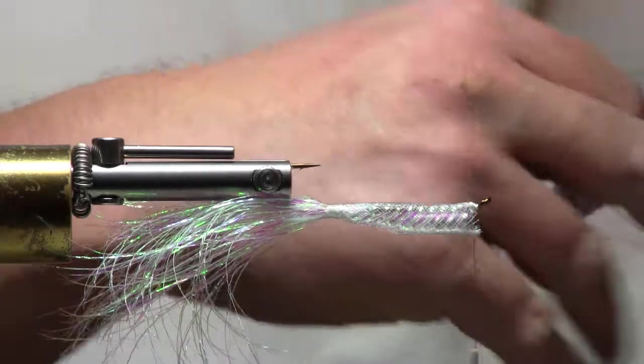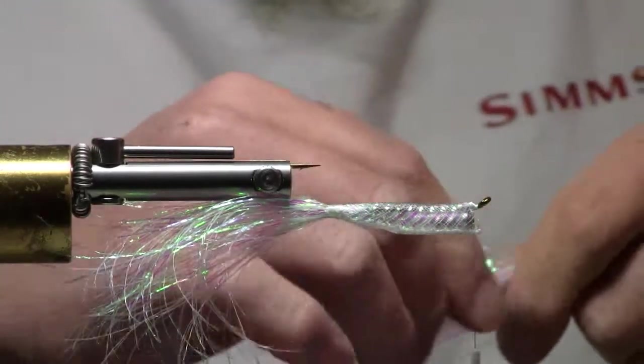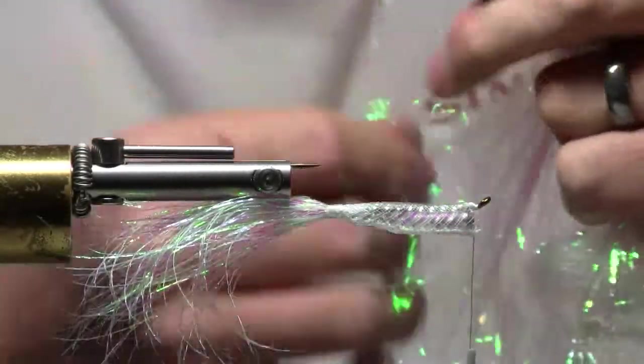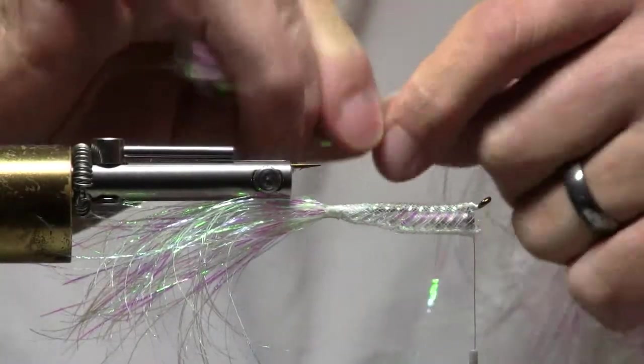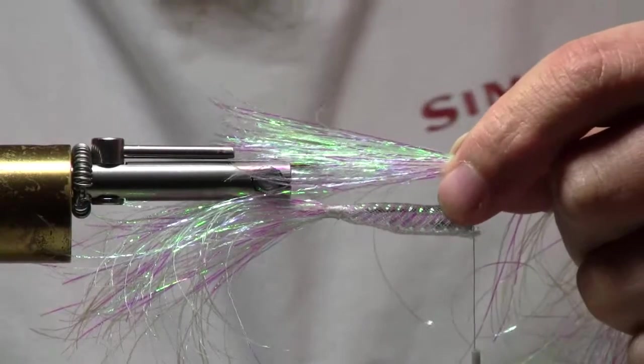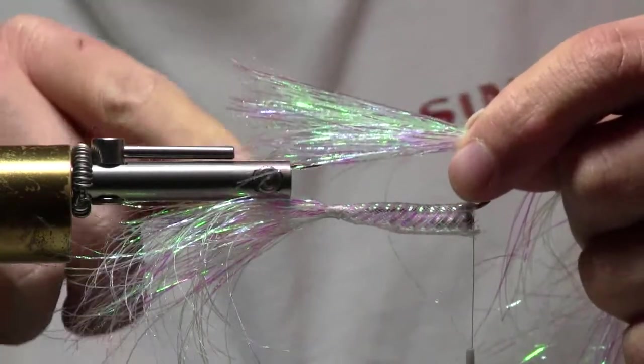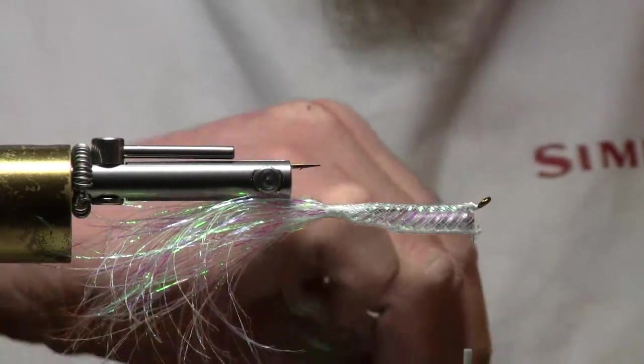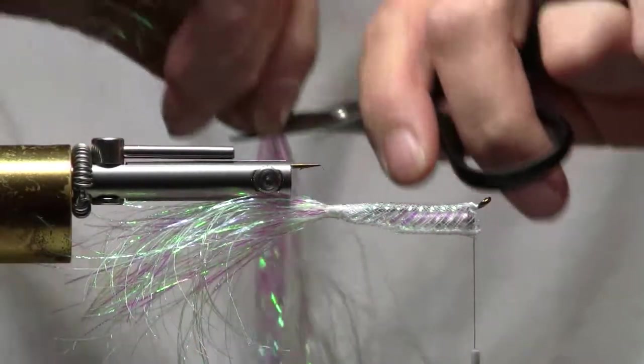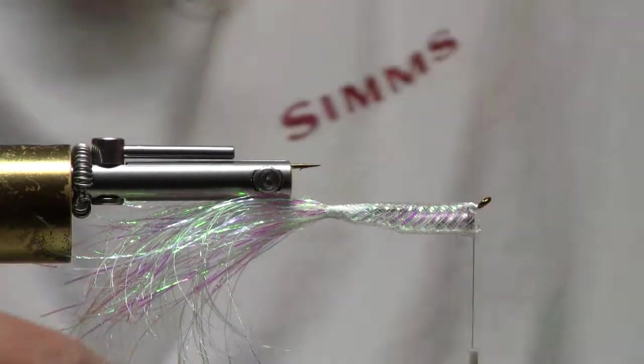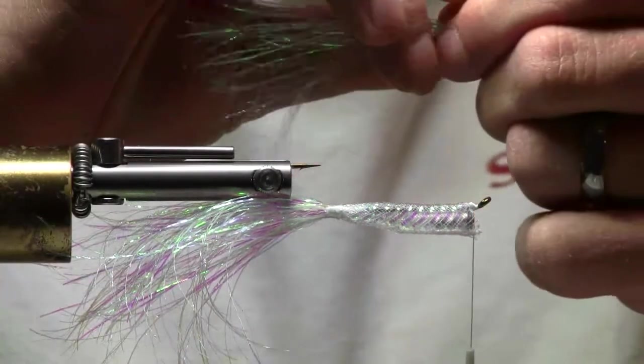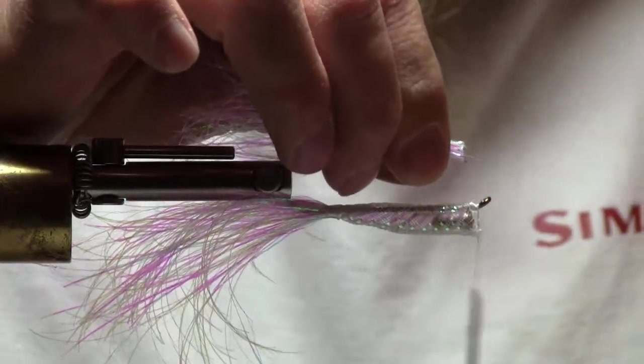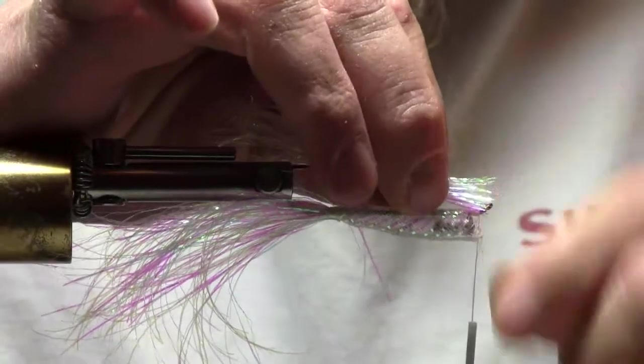I'm going to take a good chunk of it, half the thickness of a pencil, and I'm going to measure it out to go past the actual hook. It's going to be longer than the hook. Not much. Just about the length of the hook. Cut this off. I'll tie this in. Now, right behind the hook eye, I'm going to tie this clump of flash in. This will be the hard part of the whole fly. Just getting that in there.